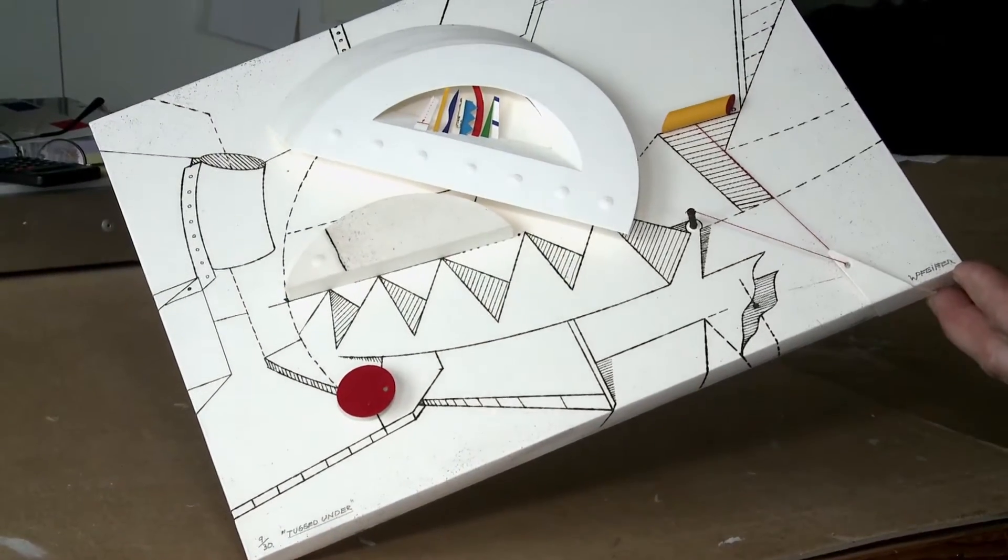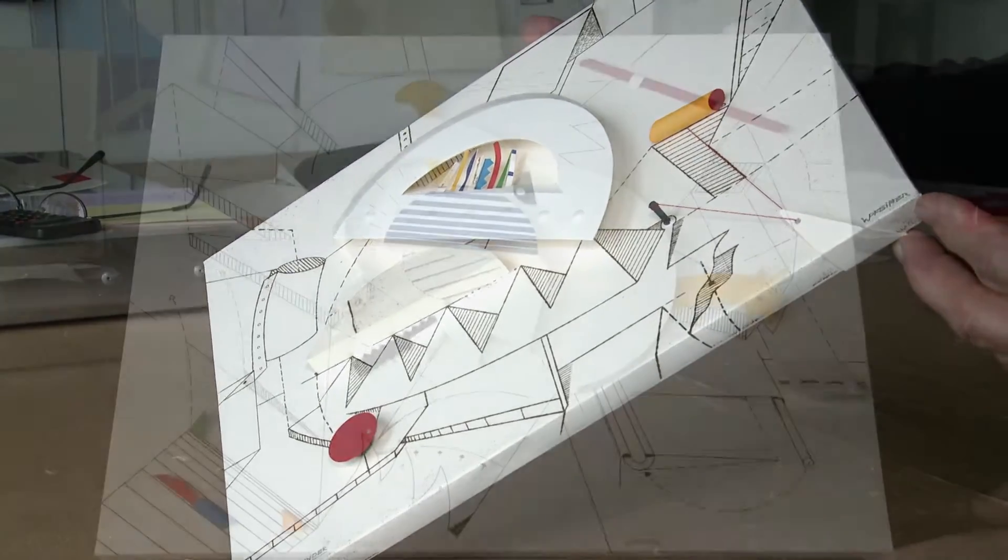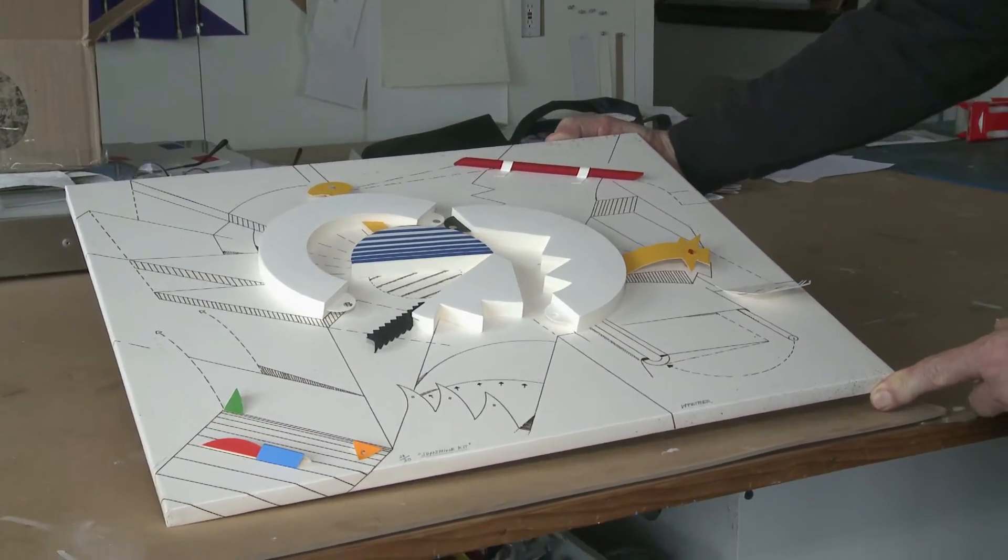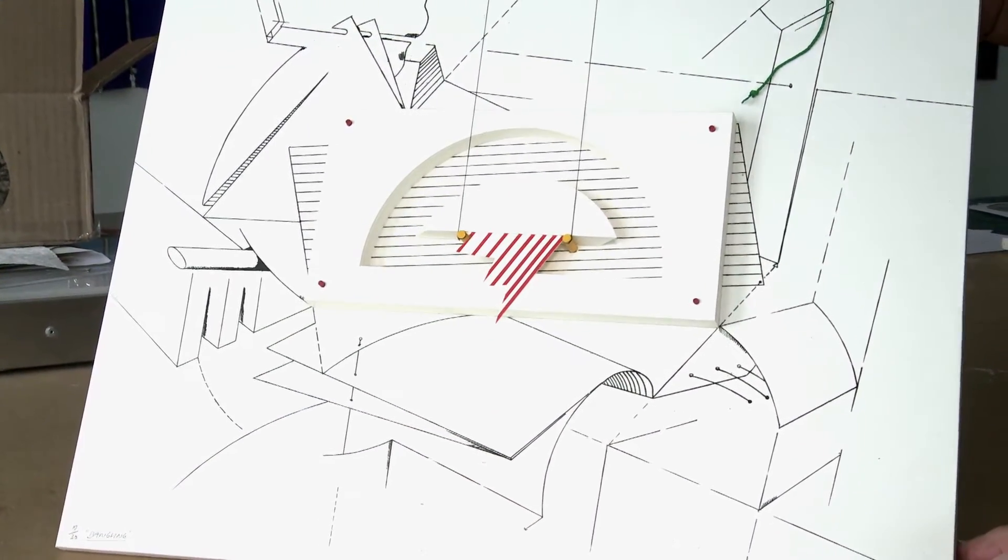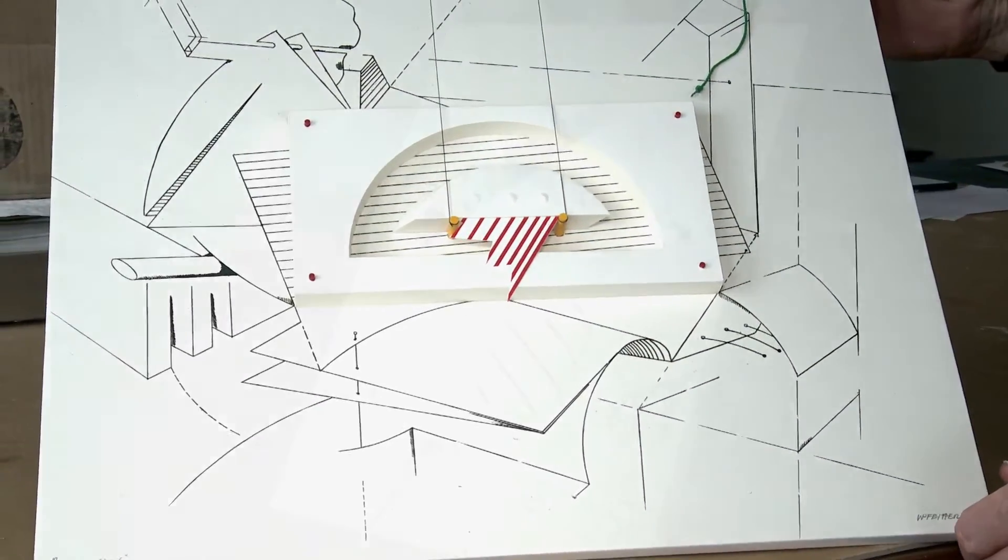I think when you look at any kind of three-dimensional piece, you have a sense of kinetic quality by simply moving in front of it. You are moving the point of view into the piece, and the light plays a very interesting part. If you have the light on the right or on the left or on top and bottom, it gives a completely different sensation of the piece.